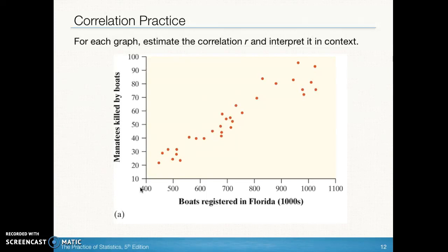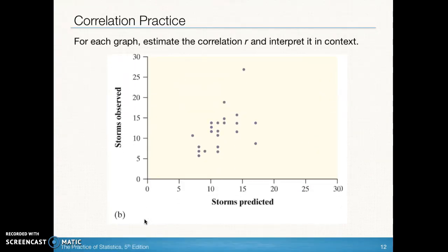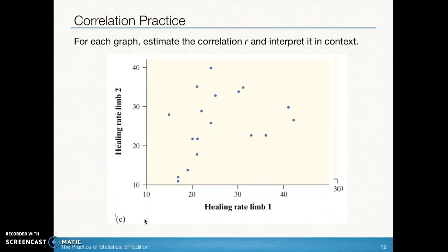Taking a look at these examples: the explanatory variable is boats registered in the state of Florida in thousands, and the response is manatees killed. We see a strong positive linear association, with four points that have a high number of boats registered but a lower than expected number of manatees killed. The next example is a little weaker, maybe 0.5 or 0.4, and positively associated — the number of storms predicted is being used to predict the number of storms observed. Another example shows a very loose pattern, maybe a 0.3 or so, in the positive direction — a weak positive relationship between the healing rate of the first limb and the healing rate of the second limb.